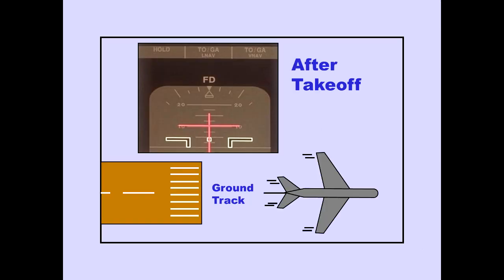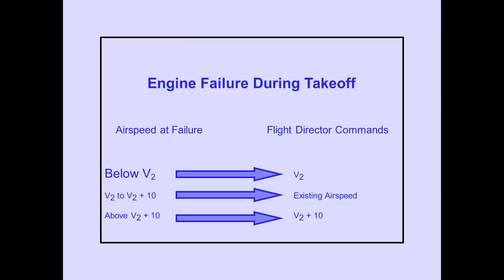After takeoff, the TOGA roll mode commands a heading to maintain the ground track which existed during the takeoff. Should an engine failure occur during takeoff below V2, the flight director commands V2. If the failure occurs between V2 and V2 plus 10, the flight director maintains existing airspeed. If airspeed is above V2 plus 10 at the time of failure, the flight director will maintain V2 plus 10.